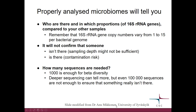This slide is by Dr. Anu Mikkonen. Properly analyzed microbiomes can tell you who is there and in which proportions, if compared to your other samples. But it's important to remember that the copy number of the 16S ribosomal RNA gene varies between bacteria — one bacterium can have one copy and another can have 15 copies. The one with 15 copies will give more sequences, even if the actual amount of bacteria were the same.